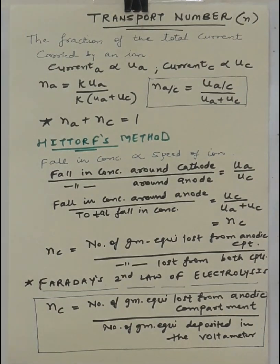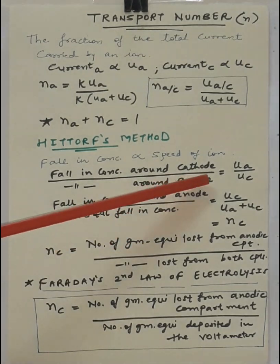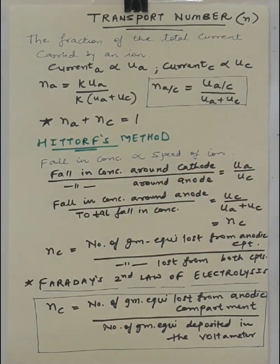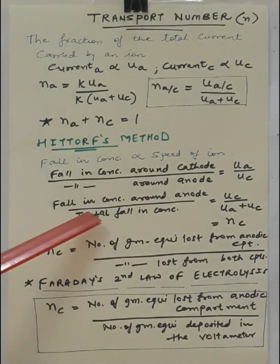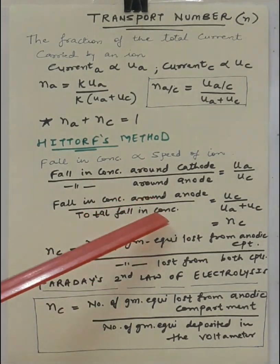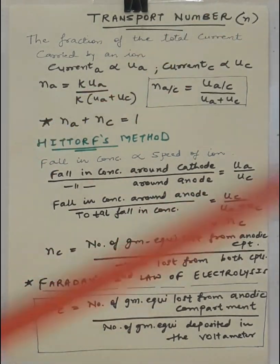I can say fall in concentration around cathode is equal to speed of anion. You can understand which ions are going to move away from cathode - those will be anions, and which ions are going to move away from anode - those will be cations. We will be taking them in the form of a fraction. Further, you can add plus 1 on both sides, take the LCM of the LHS as well as RHS and then take the reciprocal of it. After taking the reciprocal, I am getting this particular equation: fall in concentration around anode divided by the total fall in concentration, that is UC upon UA plus UC.